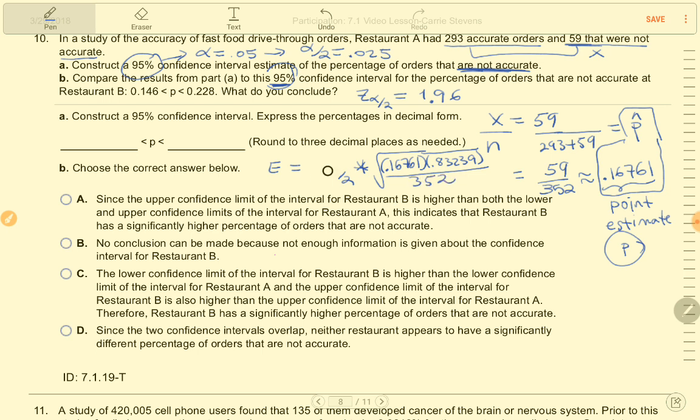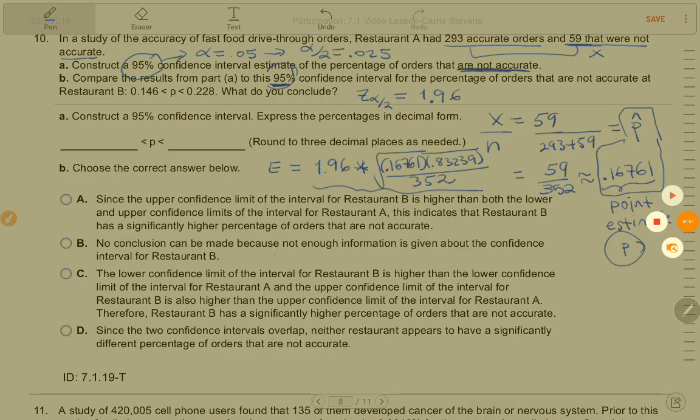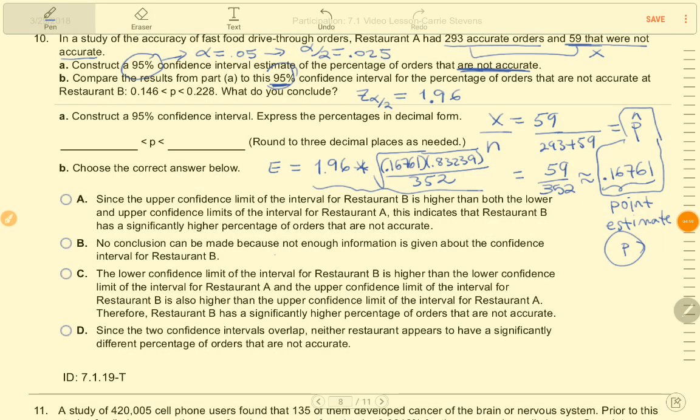Then I'm going to replace this with my critical value 1.96. So I'm just going to calculate it. All that equals about 0.039.